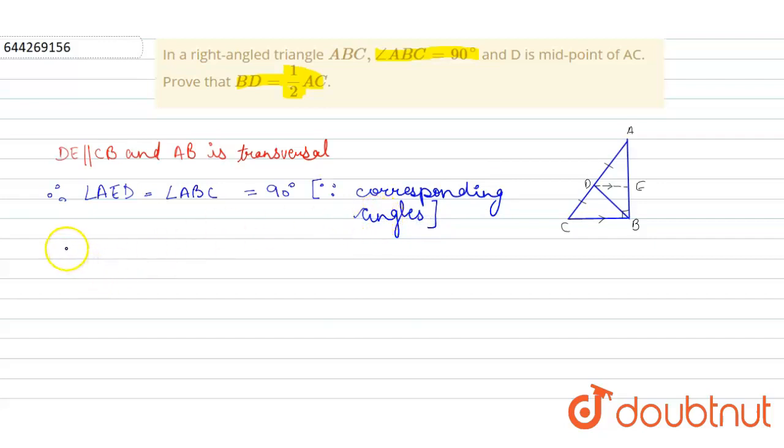Now we can say, in triangle AED and triangle BED, angle AED is equal to angle BED is equal to 90 degrees each, each angle is of 90 degrees.